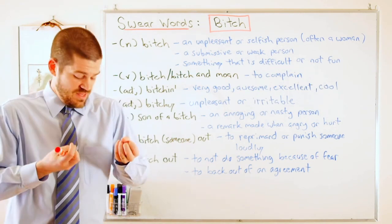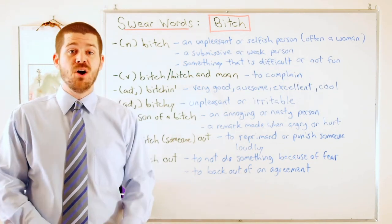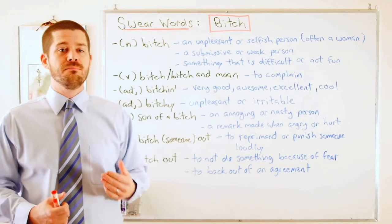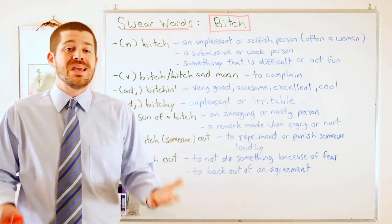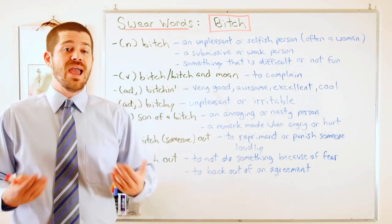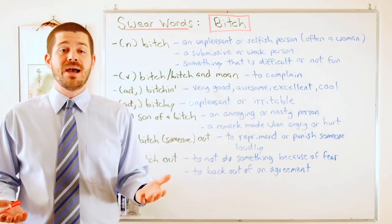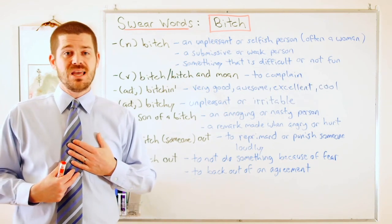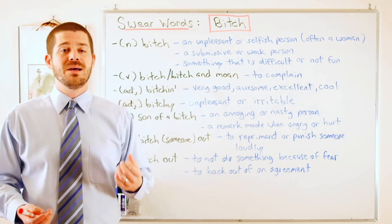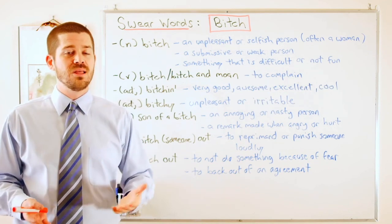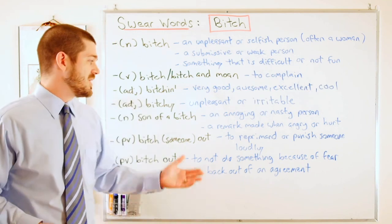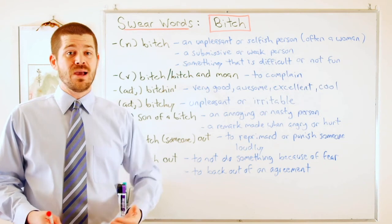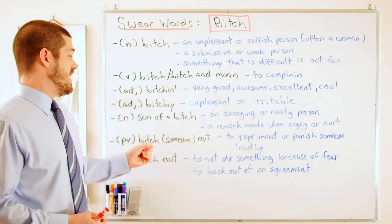The second definition of 'son of a bitch' is a remark made when angry or hurt. Imagine I'm holding something heavy and drop it on my foot — I might say 'ah, son of a bitch!' It's just a reaction when you're in pain or angry. Or imagine I'm watching a sports game and my favorite team loses, I might say 'son of a bitch, they lost!' It's an exclamation for when you're angry or hurt.